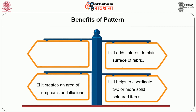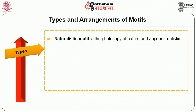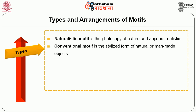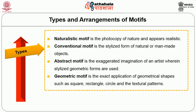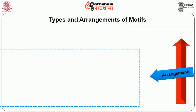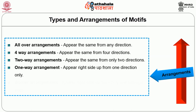Pattern creates an area of emphasis and illusions. It expresses personal style. There are different types of motifs or patterns which could be used on fabrics. The first one is naturalistic motif, which is the photocopy of nature and appears realistic. The conventional motif is the stylized form of natural or man-made objects. The abstract motif is the exaggerated imagination of an artist wherein stylized geometric forms are used. The geometric motif is the exact application of geometrical shapes such as square, rectangle, circle and the textural pattern. These motifs could be arranged in different ways on fabric: all over arrangement, four way arrangement, two way arrangement and one way arrangement.